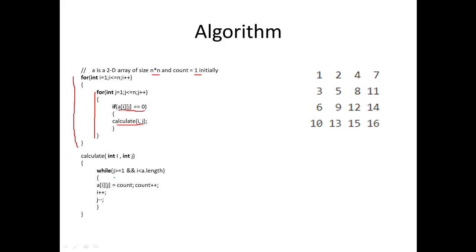Now let's look at the calculateIJ function. Here we have a while loop with two conditions: j is greater than or equal to 1, and i is less than a.length, where a.length is the size of the array, that is n. Inside we perform the operation: a[i][j] = count, then count++, increment i, and decrement j.